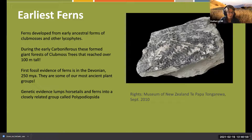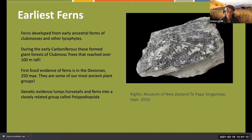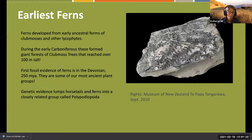Horsetails are another favorite plant of mine - Equisetum, also called scouring rushes. You often see them near streams. People used to use them for washing things - that's why they're called scouring rushes, because they have a rough texture.